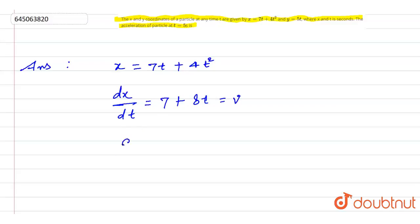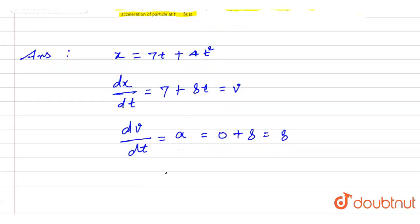And further differentiate velocity with respect to time. So we will get acceleration is equal to 0 plus 8 is equal to 8. Therefore, acceleration in x direction is equal to 8 meter per second square.